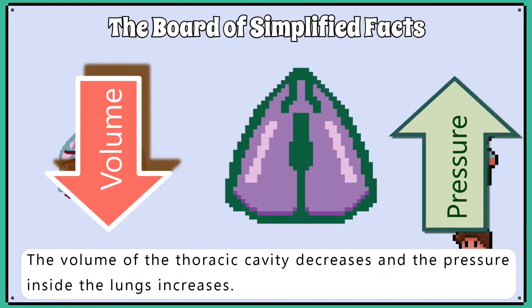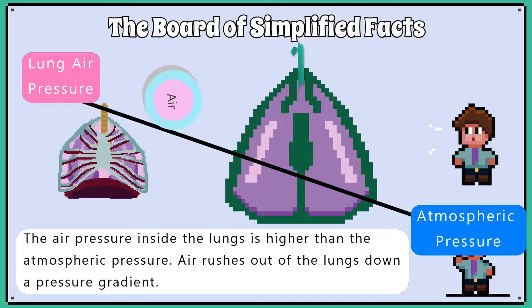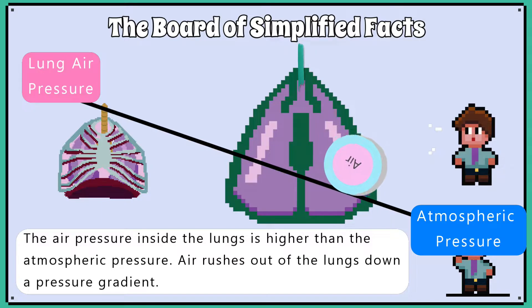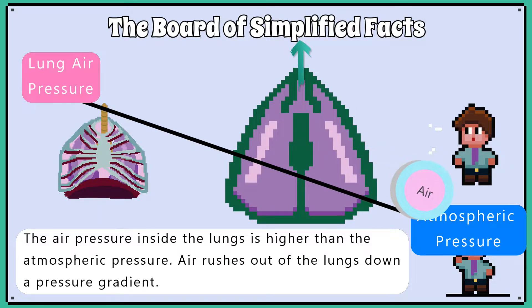The volume of the thoracic cavity decreases and the pressure inside the lungs increases. The air pressure inside the lungs is higher than the atmospheric pressure, so air rushes out of the lungs down a pressure gradient.